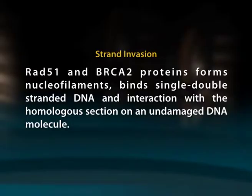In eukaryotic cells, RPA binds to single stranded DNA and then binds the 3 prime overhangs. RPA prevents single stranded DNA from winding back on itself or forming secondary structures during DNA replication. Rad51 and BRCA2 protein form nuclear filaments, bind single and double stranded DNA, and interact with the homologous section on an undamaged DNA molecule called strand invasion. Rad51 will catalyze the strand exchange in a D-loop shape and the DNA synthesis will happen on the invading strand.